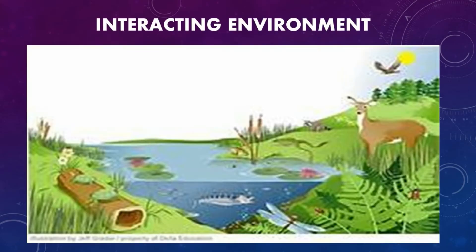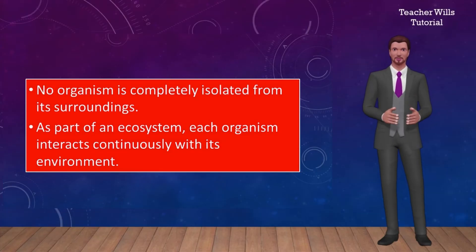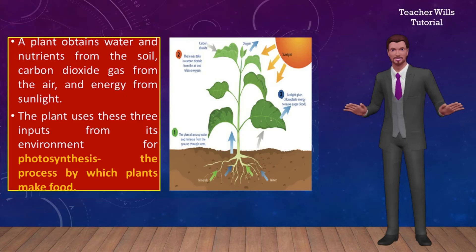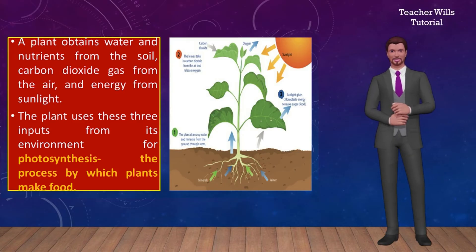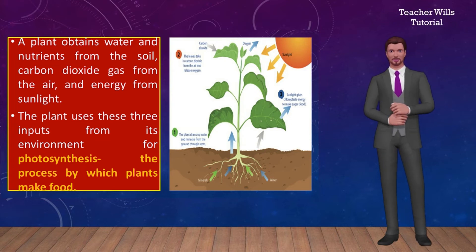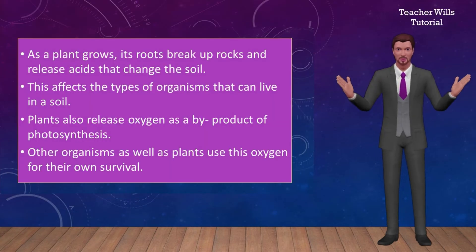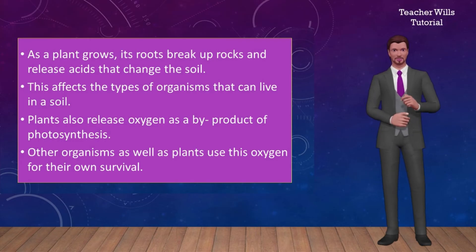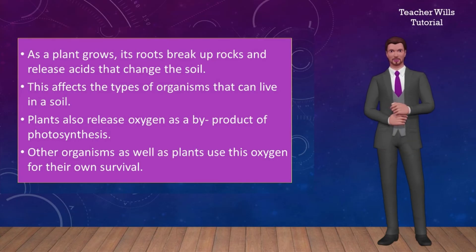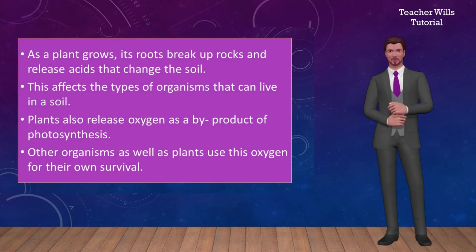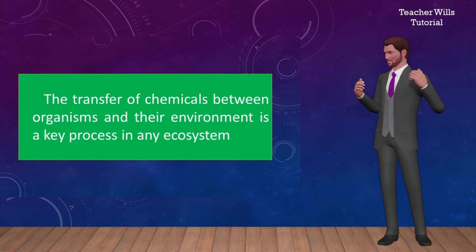The fifth unifying theme in the study of life science is the interaction with the environment. No organism is completely isolated from its surroundings. As part of an ecosystem, each organism interacts continuously with its environment. For example, a plant obtains water and nutrients from the soil, carbon dioxide gas from the air, and energy from sunlight. The plant uses these three inputs from its environment for photosynthesis, the process by which plants make food. Likewise, the plant also has an impact on its surroundings. As a plant grows, its roots break up rocks and release acids that change the soil, affecting the types of organisms that can live in that soil. Plants also release oxygen as a byproduct of photosynthesis. Other organisms as well as plants use this oxygen for their own survival. The transfer of chemicals between organisms and their environment is a key process in any ecosystem.